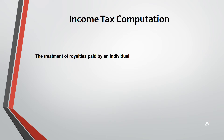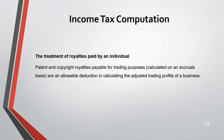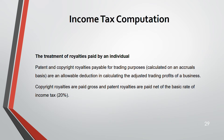Regarding royalties: patent or copyright royalties payable for trading purposes are an allowable deduction when calculating adjusted trading profit. They are deducted on an accruals basis. Copyright royalties are paid gross; patent royalties are paid net of basic rate tax (20%). The collection of basic tax on patent royalties will not be examined in ATX.